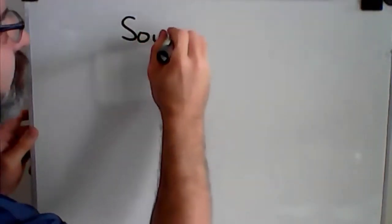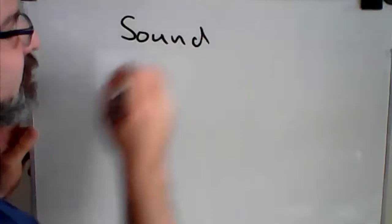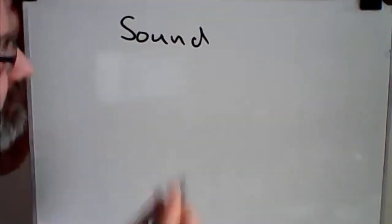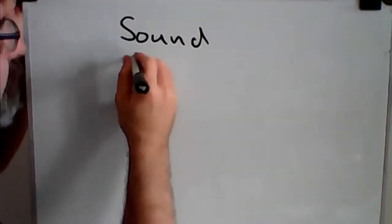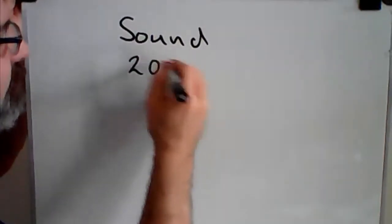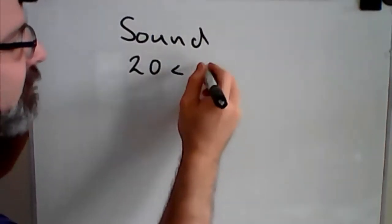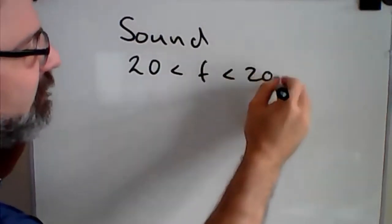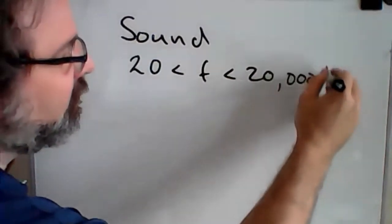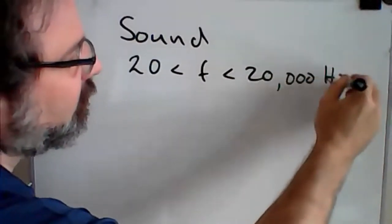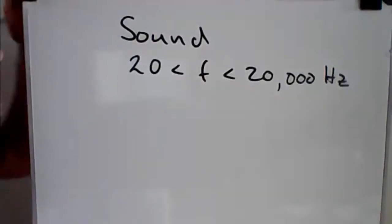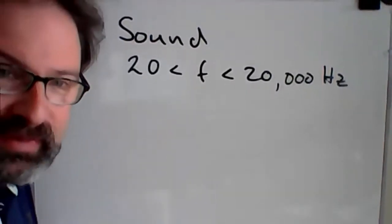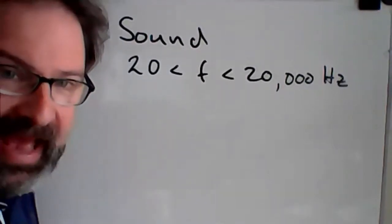For sound, a couple of things we said: sound waves have frequencies between 20 and 20,000 hertz. That's the range of frequencies that we have.